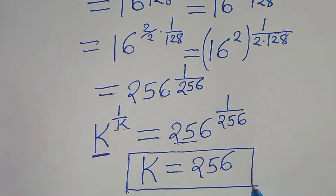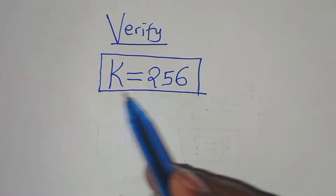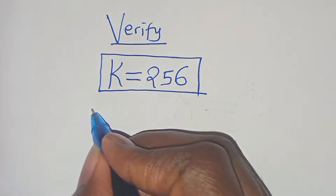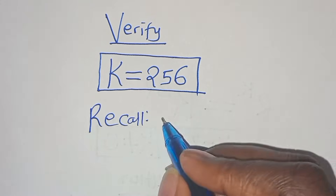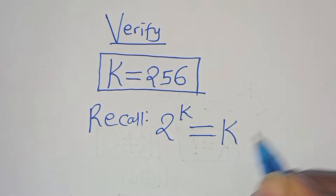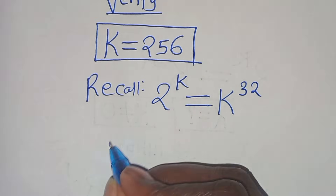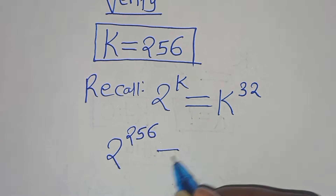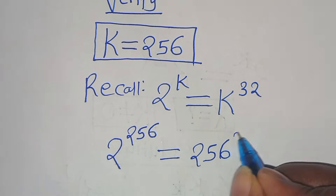The next step is to verify that k equals 256 satisfies the original equation. Recall we have 2 to the power of k equals k to the power of 32. Substituting k equals 256, we get 2 to the power of 256 equals 256 to the power of 32.